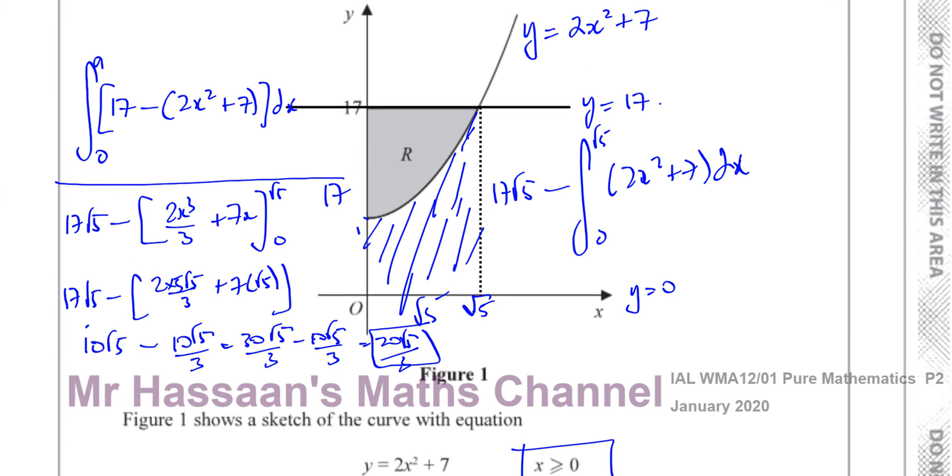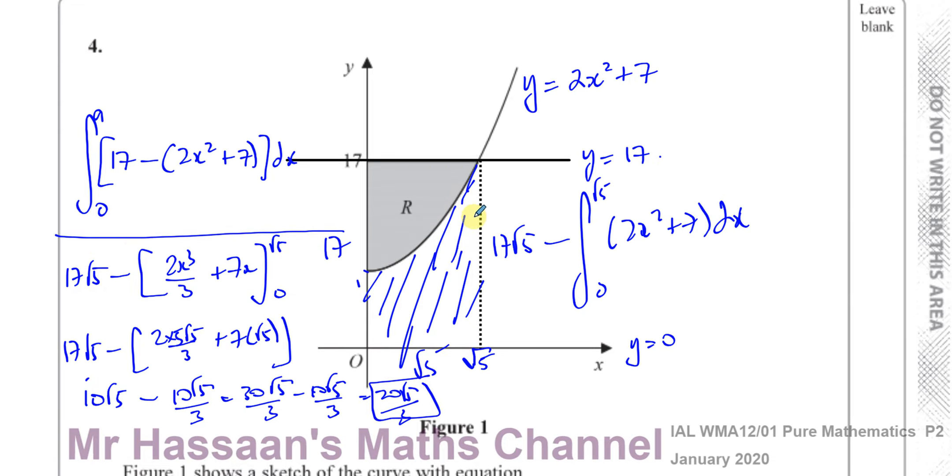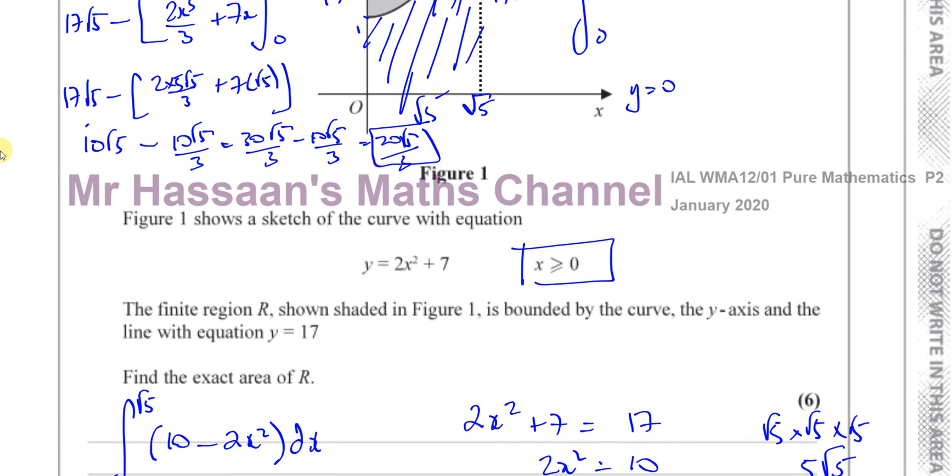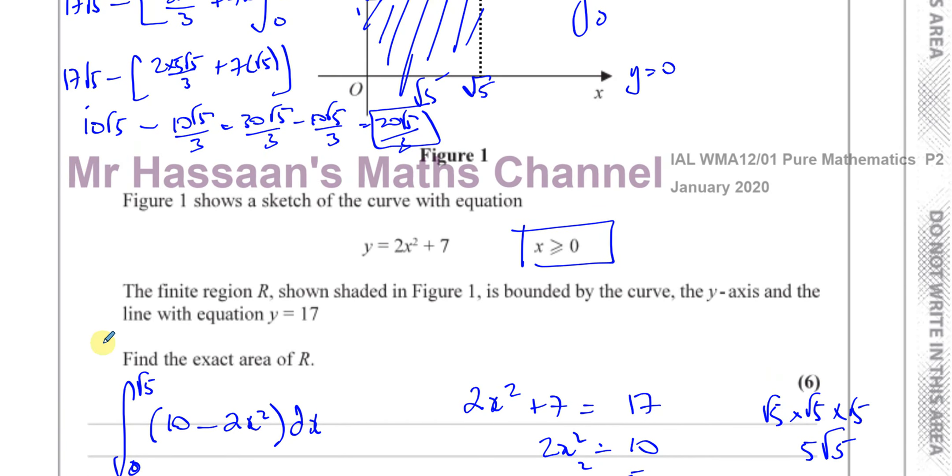So I'm just showing you this other method just to show you that there's different methods we could use. But when you've got the area between a line and a curve, and it's just simple, there's nothing missing out from anything, that is easy for you to just subtract the equations, keep in mind the one on top should be coming first, and subtract them, and then integrate what you get. And that will give you the area between them. If you did by mistake, for example, 2x squared plus 7 minus 17, your answer would come out as negative. It would be negative minus 20 root 5 over 3. And of course, you just write your answer as positive. It doesn't make any difference in terms of your steps. You can just say, okay, as the area is positive, it must be a positive answer. So that's how you can fix it at the end. So there we have the answer to question number 4, done in two different ways.